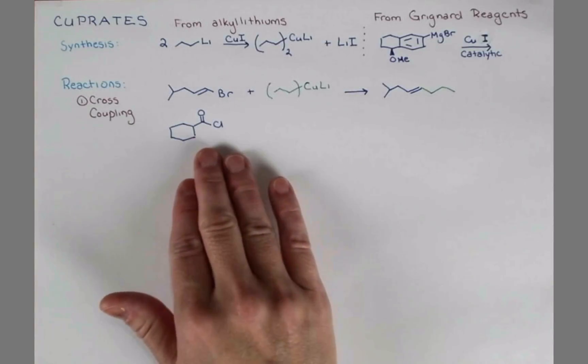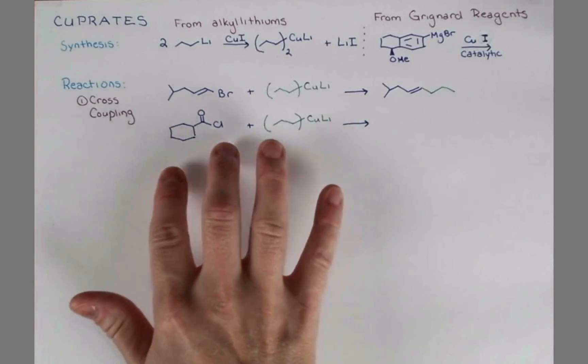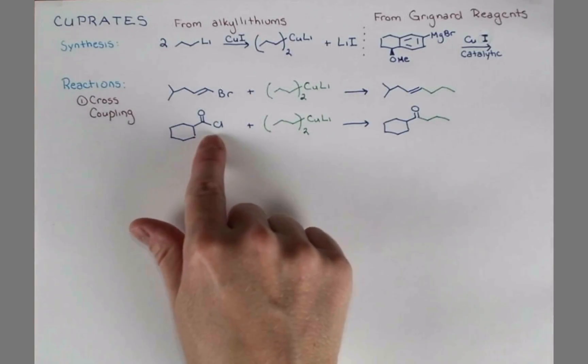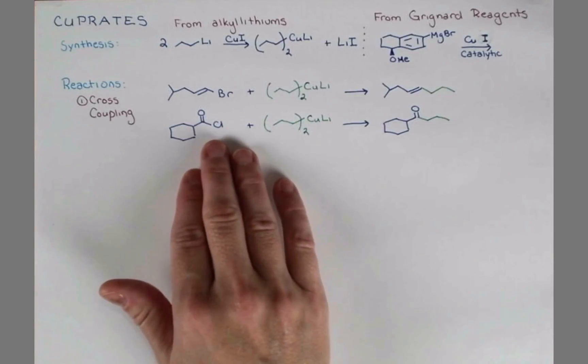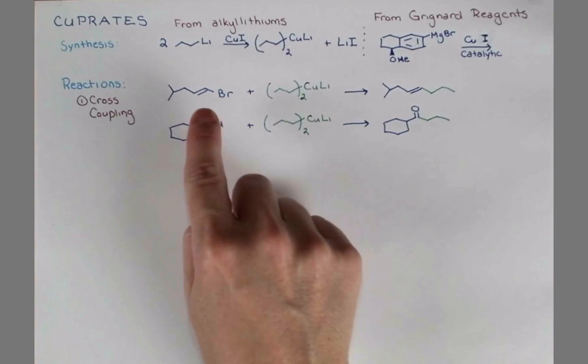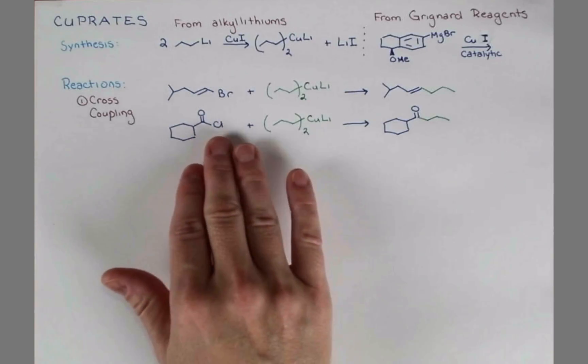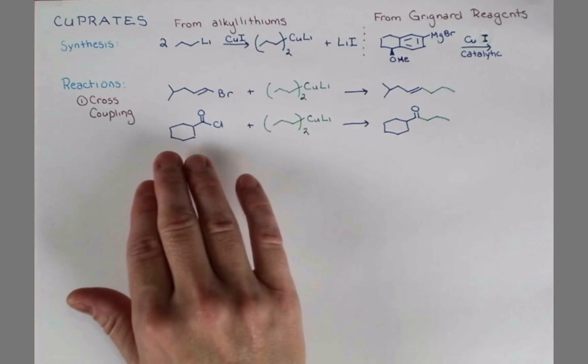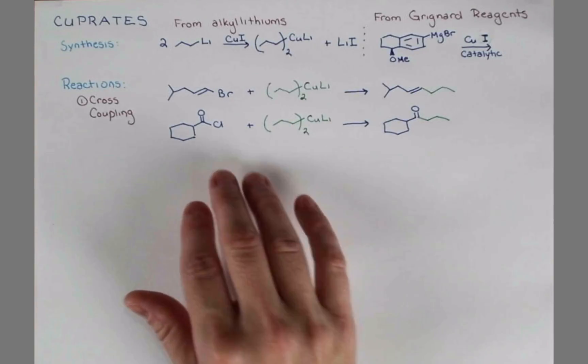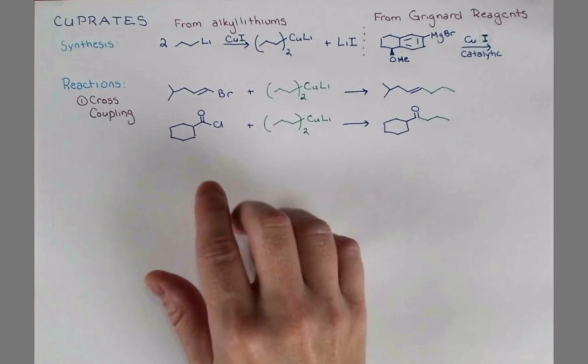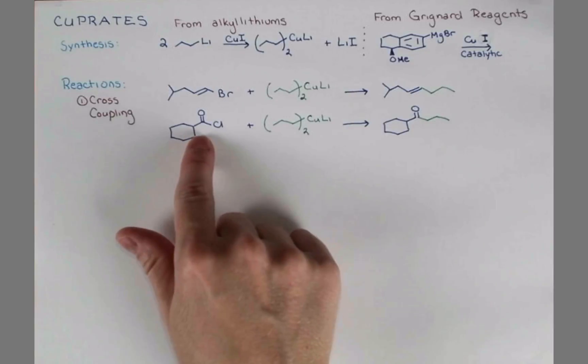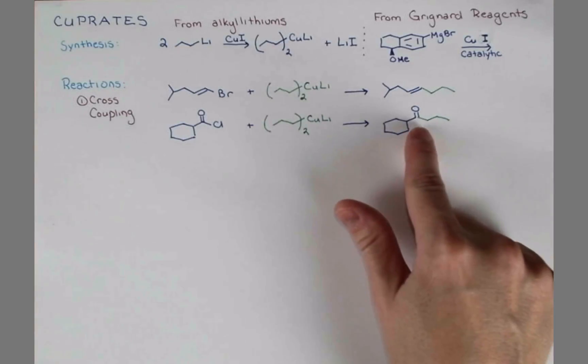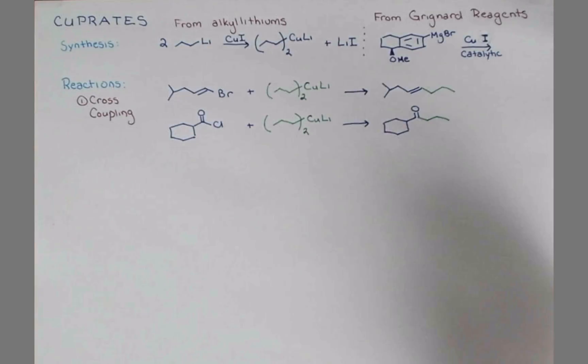The cross-coupling reaction even works with acid chlorides. These two pieces will combine, and the group from our cuprate replaces the chlorine on the acid chloride. Now remember that Grignards and alkyl lithium reagents nucleophilically attack at carbonyls. And we would never really want to react them with an acid chloride because acid chlorides are way too reactive anyway. So we would expect nucleophilic attack if we did that reaction. But here, instead, the carbonyl stays intact. We can replace the chlorine with this group smoothly and in good yield.